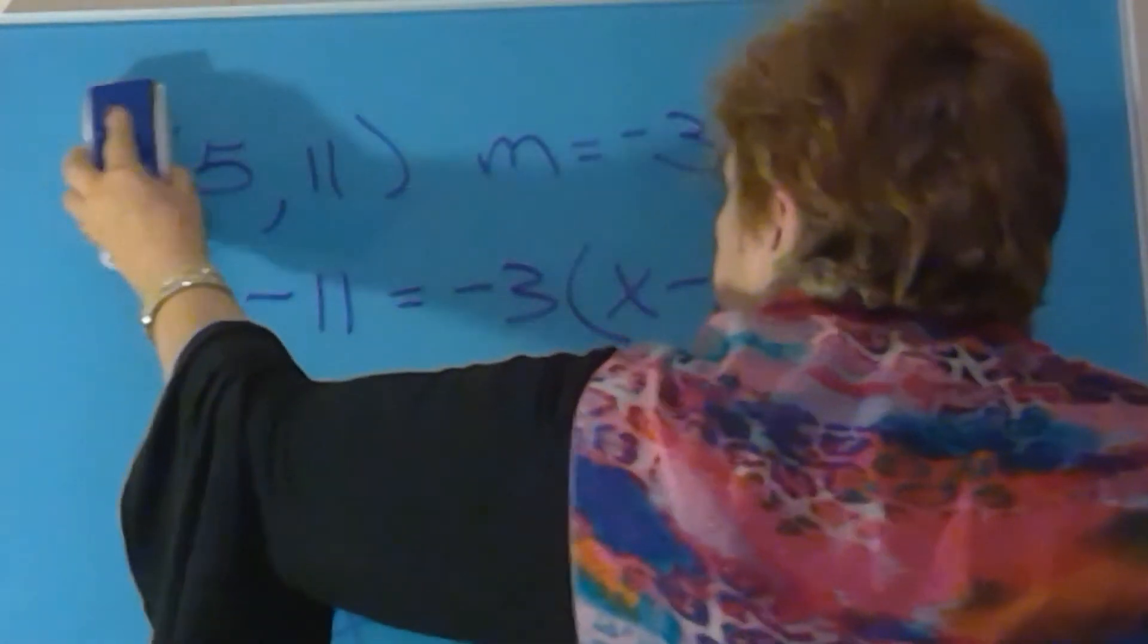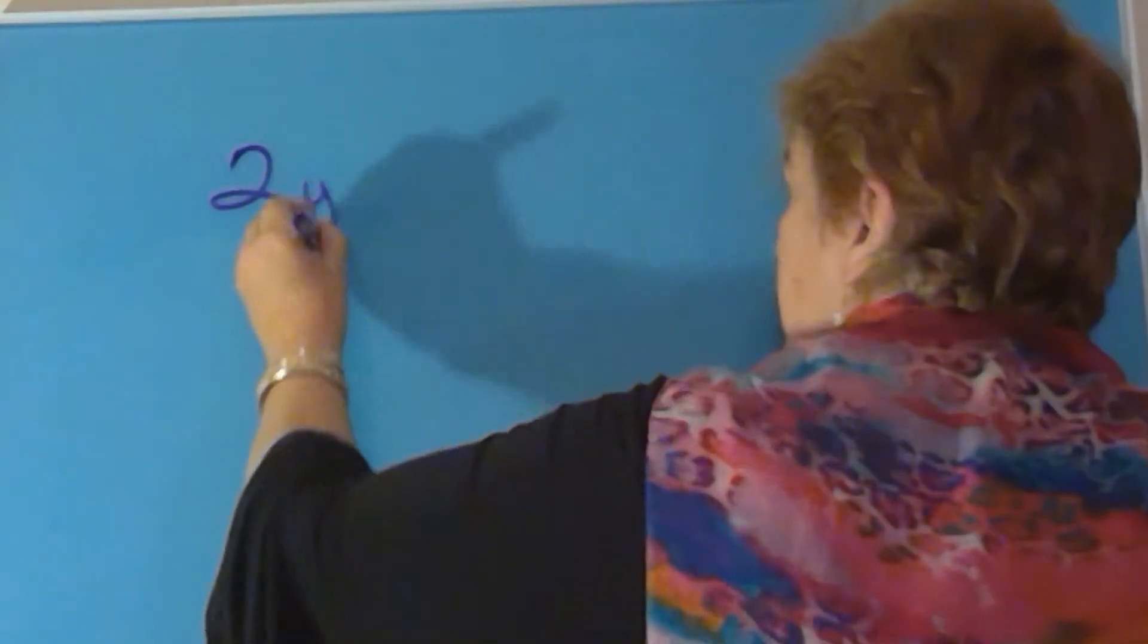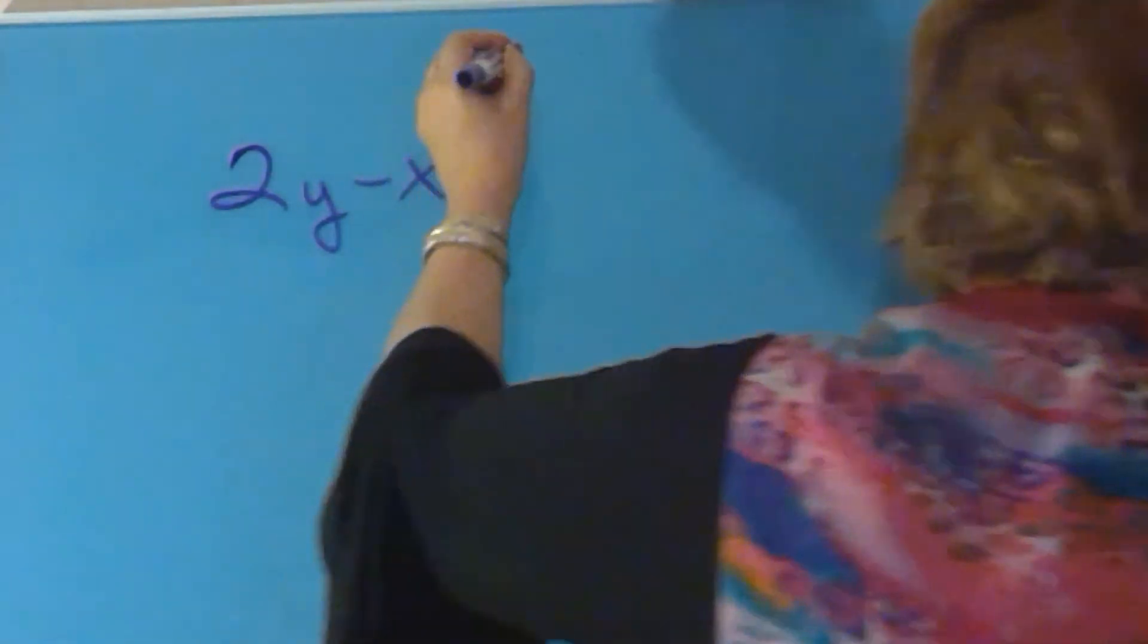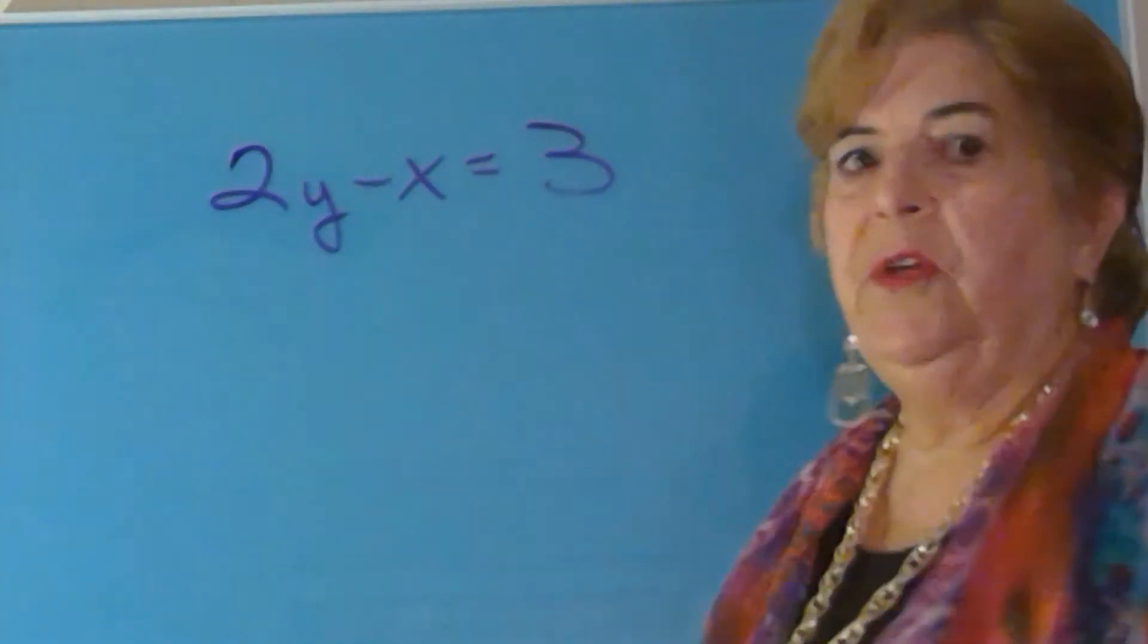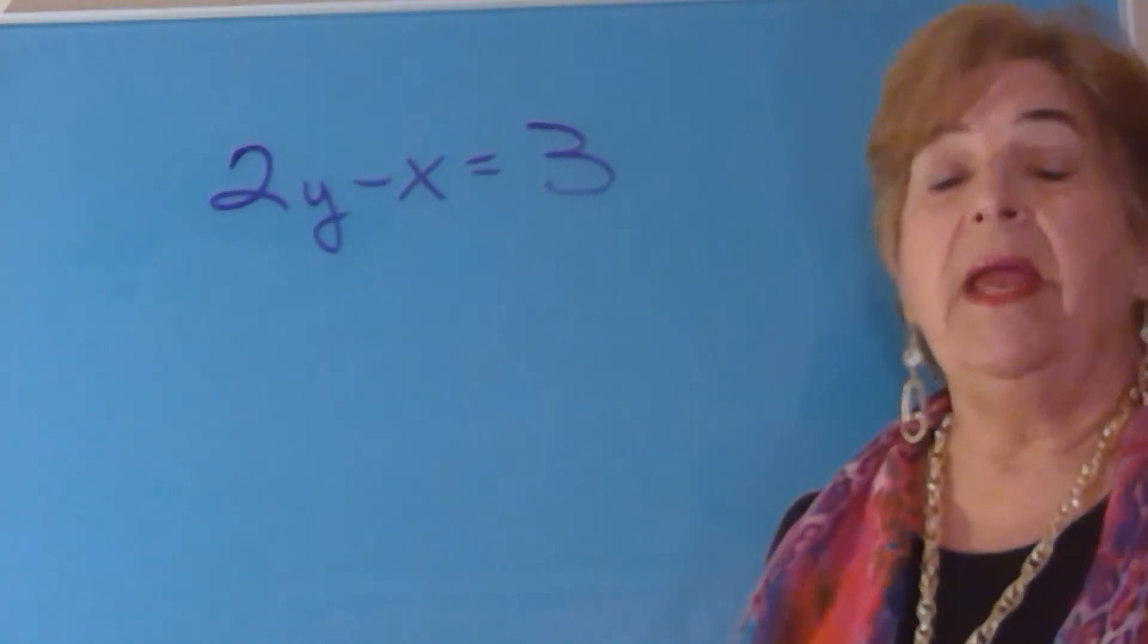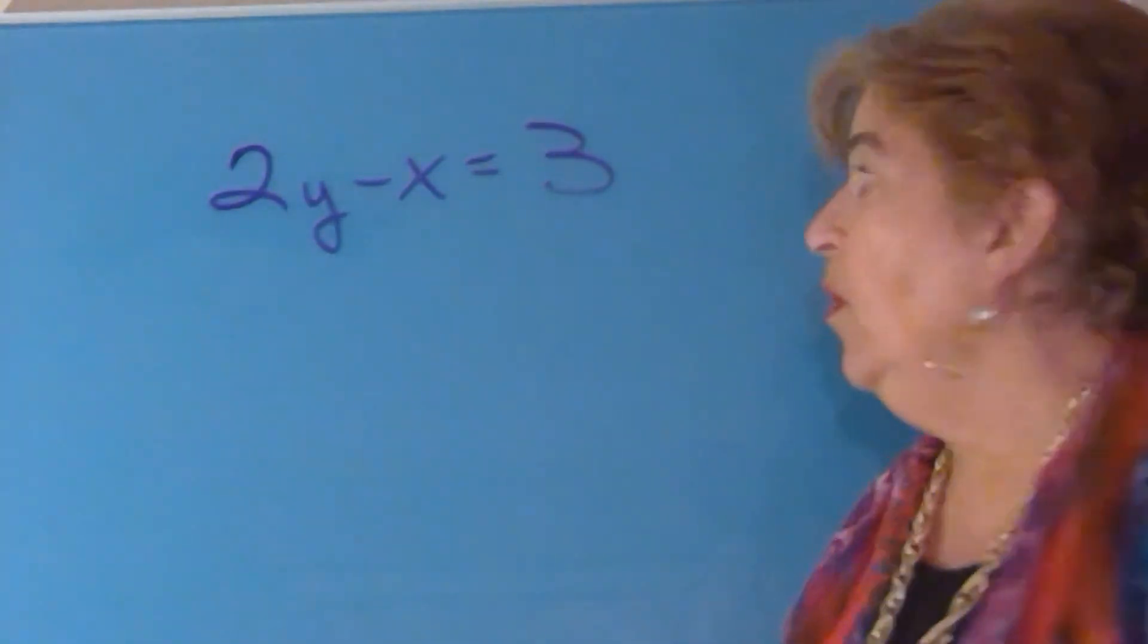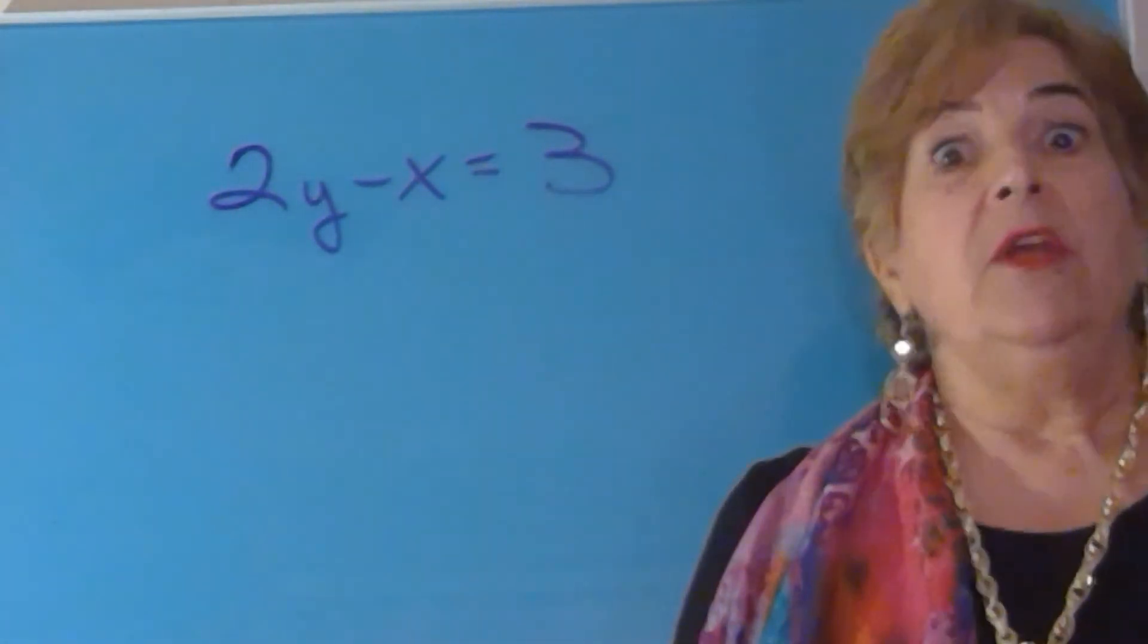The last problem was to show me if you knew how to find the slope of a perpendicular line. Some of you showed me that you did not know how to do this. So please pay attention. If you're given an equation of a line, that's the equation of the line that you were given. The first thing you need to do is find the slope of that line. And to find the slope of this line, you're going to put it in slope intercept form, which means solve for y.